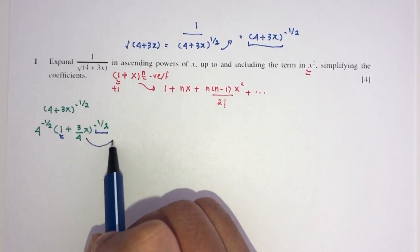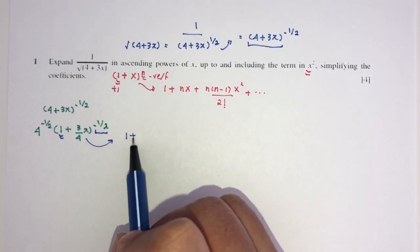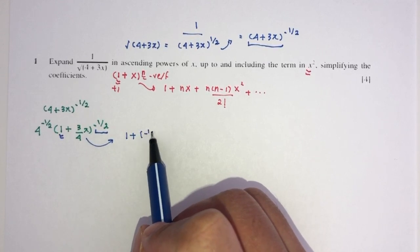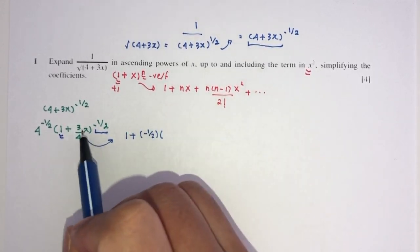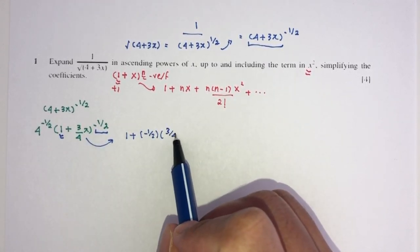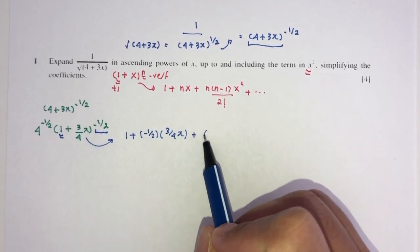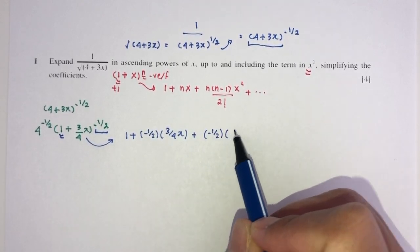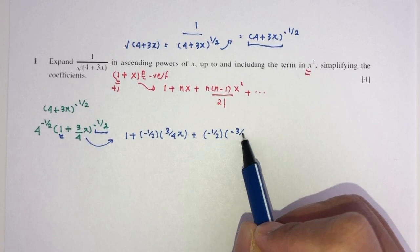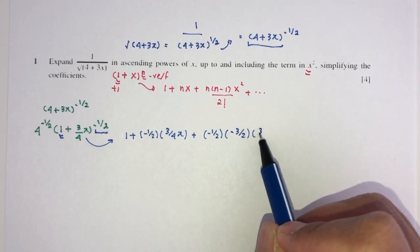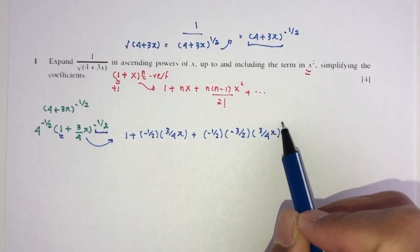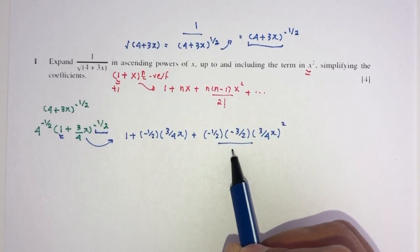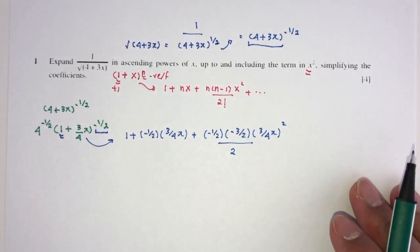This inside value will become 1 plus n, the power, times x, which is 3 over 4x, plus n, which is the power again, minus half, times minus half minus 1, which will become minus 3 over 2, then x squared divided by 2 factorial, which is just 2.